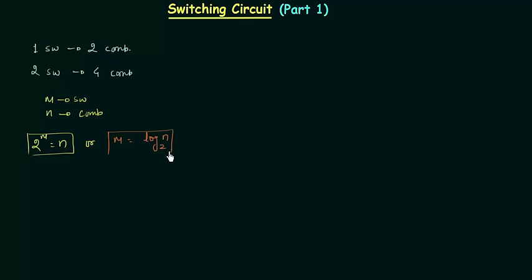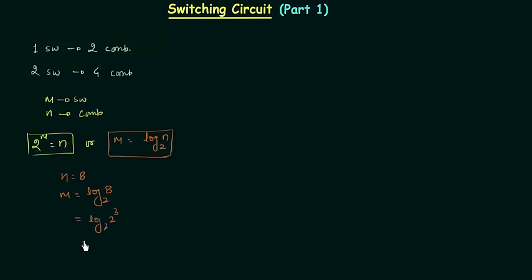So if we know the number of combinations we can easily find out the number of switches required. For example, if N is equal to 8 — 8 is the total number of combinations — then M is equal to log base 2 of 8. We can write 8 as 2 to the power 3, then we have 3 times log base 2 of 2, and this is equal to 1, so M is equal to 3. We will use three switches to implement eight combinations.